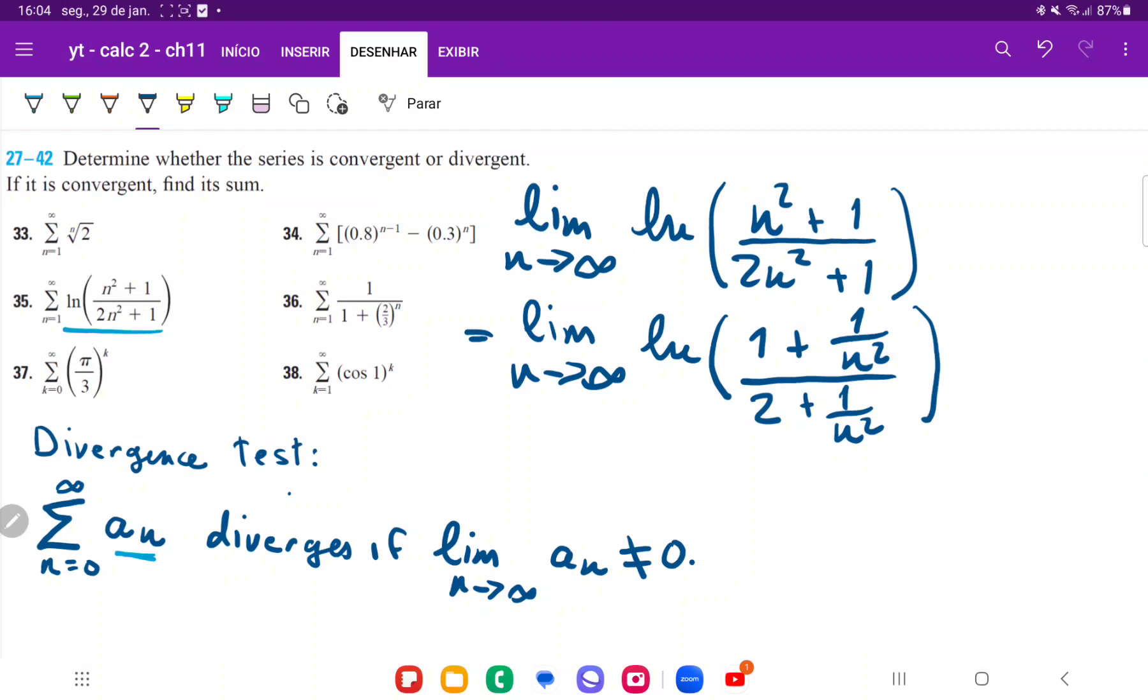And now we're ready to apply this limit here. So that's just going to be the ln of 1 plus 1 divided by infinity. This term here goes to 0.